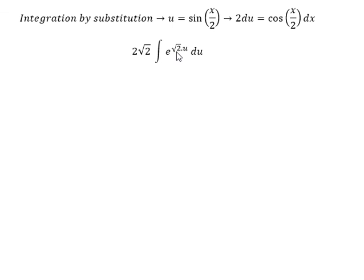And now we can get the final answer. The integral of e to the power of the square root of u, multiply with the square root of 2, you will get e multiplied with the square root of 2 with u divided by square root of 2.